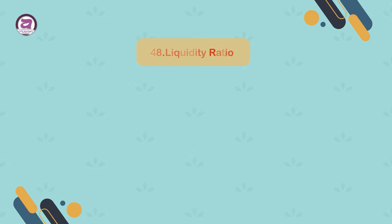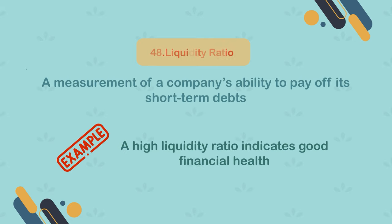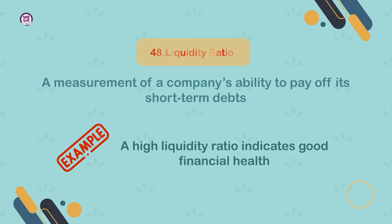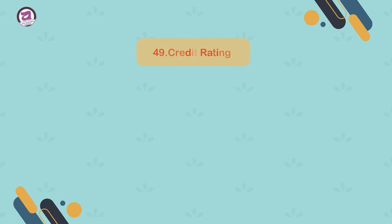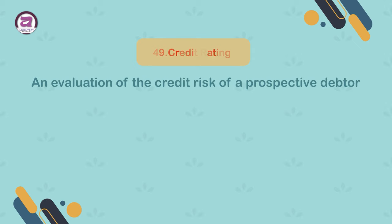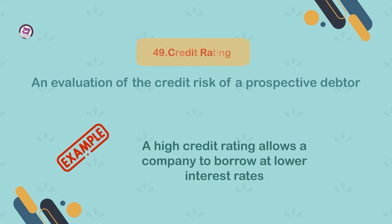48. Liquidity ratio. A measurement of a company's ability to pay off its short-term debts. Example: a high liquidity ratio indicates good financial health. 49. Credit rating. An evaluation of the credit risk of a prospective debtor. Example: a high credit rating allows a company to borrow at lower interest rates.